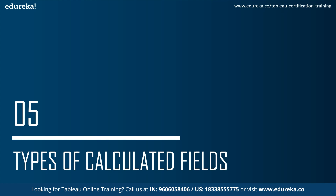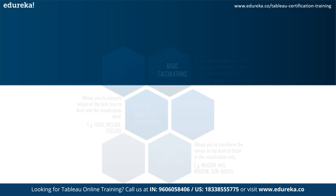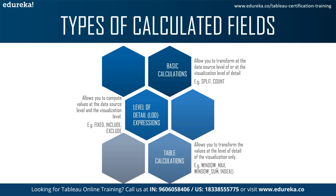Now let's look at the different types of calculated fields. There are mainly three types. First, basic calculations, which are aggregate calculations where you can transform values or members at the data source level of detail — a row-level calculation — or at the visualization level of detail. Second, LOD expressions (Level of Detail) can be carried out at a more granular level using 'INCLUDE', a less granular level using 'EXCLUDE', or a completely independent level using 'FIXED'. Third, table calculations transform values only at the level of detail of the display, using functions like WINDOW_MAX, WINDOW_SUM, INDEX, etc.